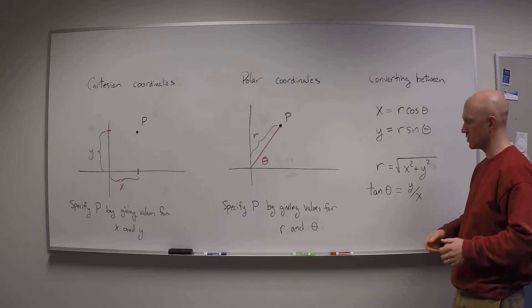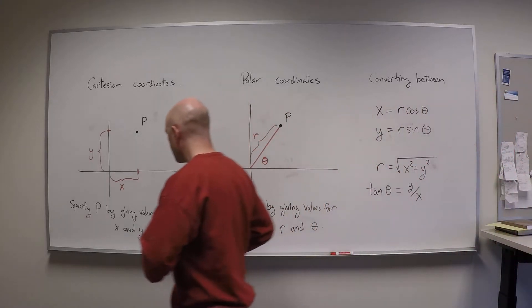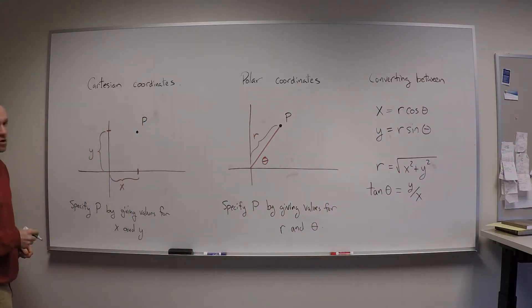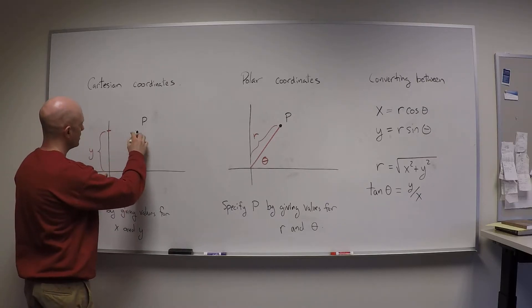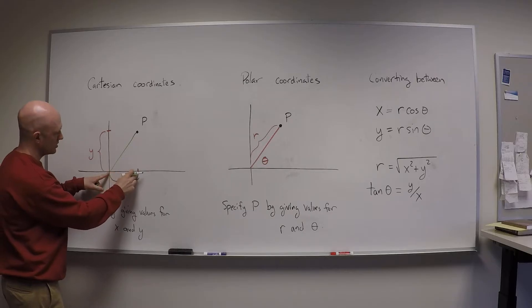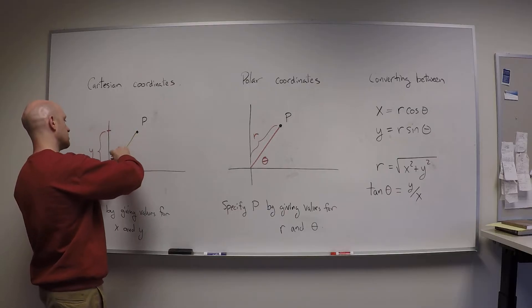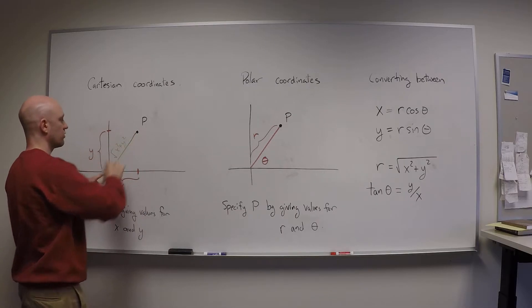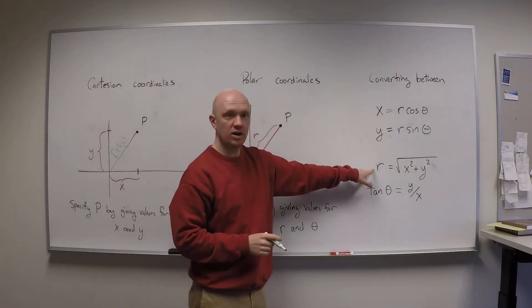So let me show you how these formulas work. For example if I draw this distance right here and if I know that x is the horizontal distance, y is the vertical distance, I know that the total distance to this point right here would be x squared plus y squared square root and that's where this r comes from.